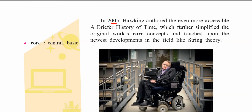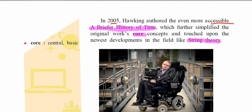In 2005, Hawking authored the even more accessible A Briefer History of Time, which further simplified the original work's core concepts — core meaning central, basic, and most important — and touched upon the newest developments in the field like string theory. This is the simplest of the three books, introducing new scientific developments including string theory.